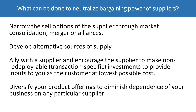What can be done to neutralize the bargaining power of suppliers? Narrow the selling options of the supplier through market consolidation, merger, or alliances. Develop an alternative source of supply — having multiple suppliers for a given part forces them to compete with each other. Encourage the supplier to make non-redeployable transaction-specific investments to provide inputs to you at as low a cost as possible; you can even fund some of that yourself and get a return by locking that supplier into investments they'd have to give up to go elsewhere. Finally, diversify your product offerings to diminish dependence on any particular supplier.